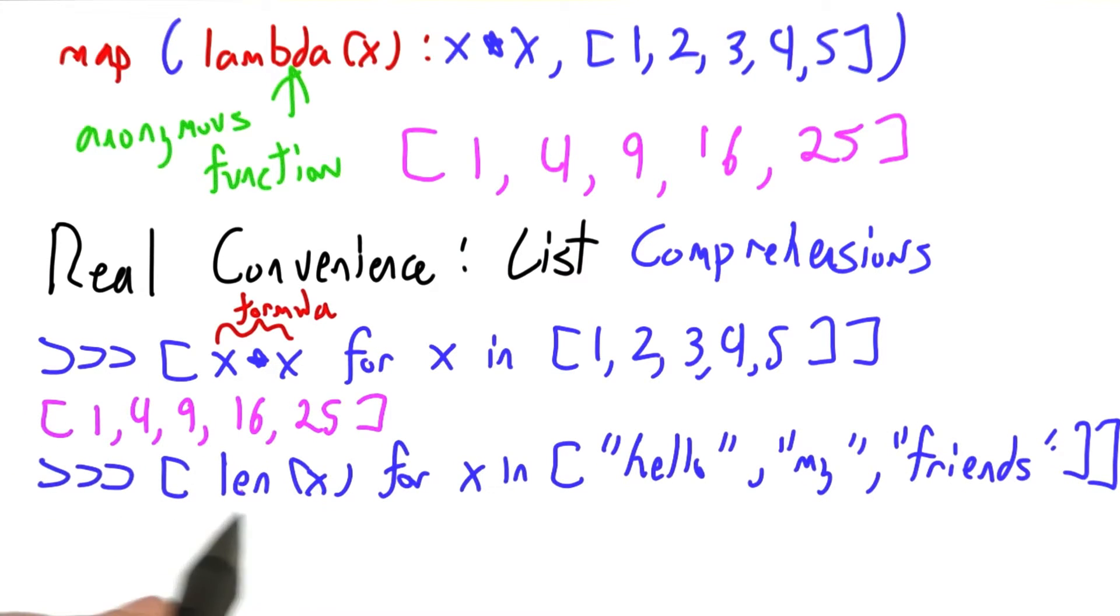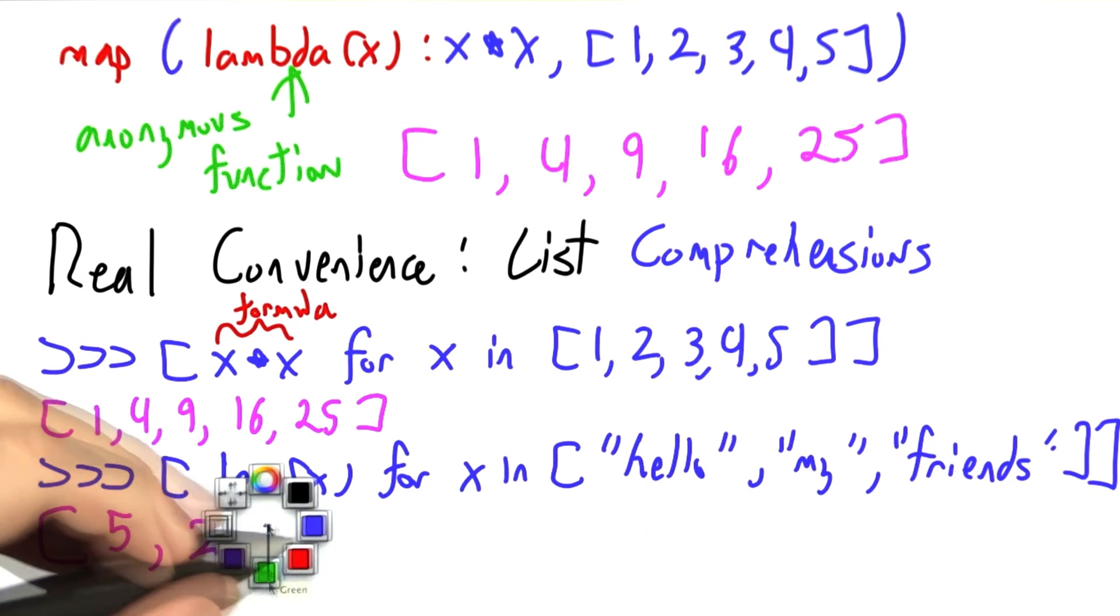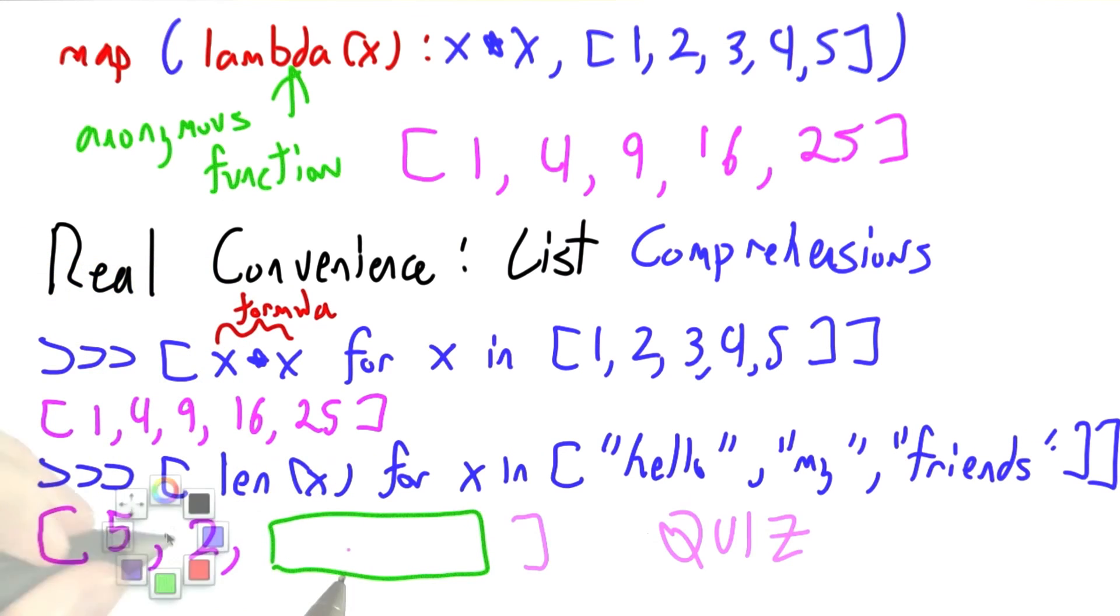These formulas can be arbitrarily complicated, any expression you like. So here, x is going to be hello, and then my, and then friends, and we're going to make a list out of the length of each of those. So that's going to be 5, and then 2, and then, actually, you tell me. What's going to show up here?